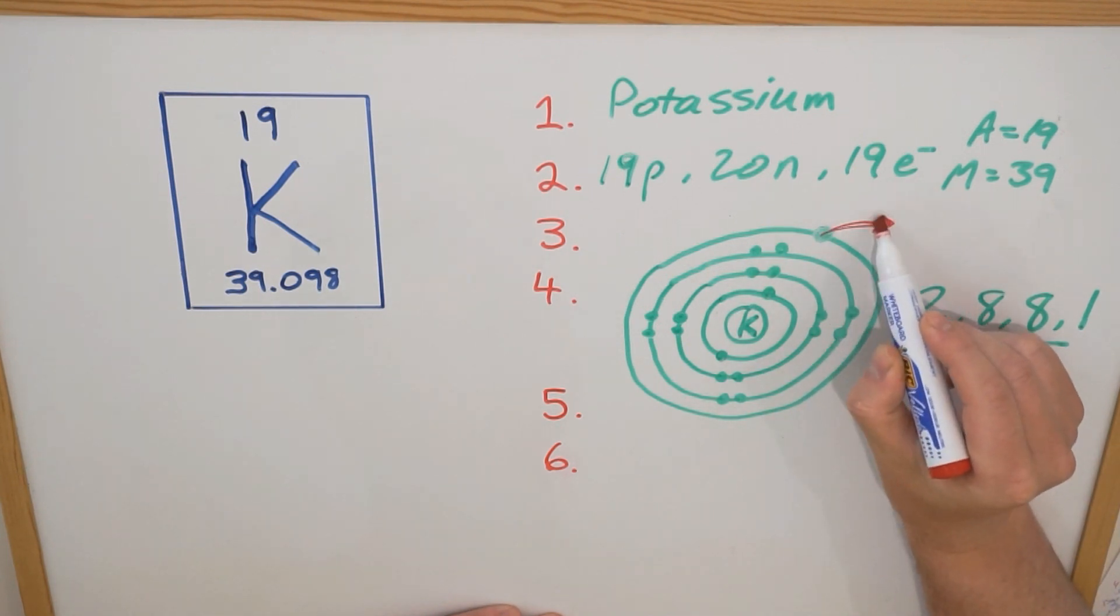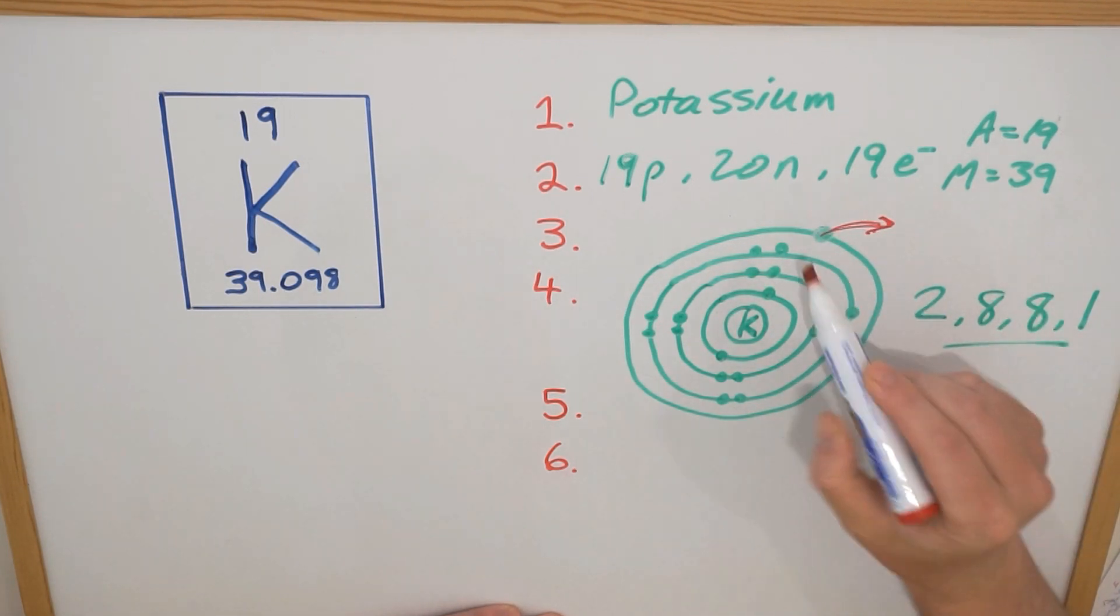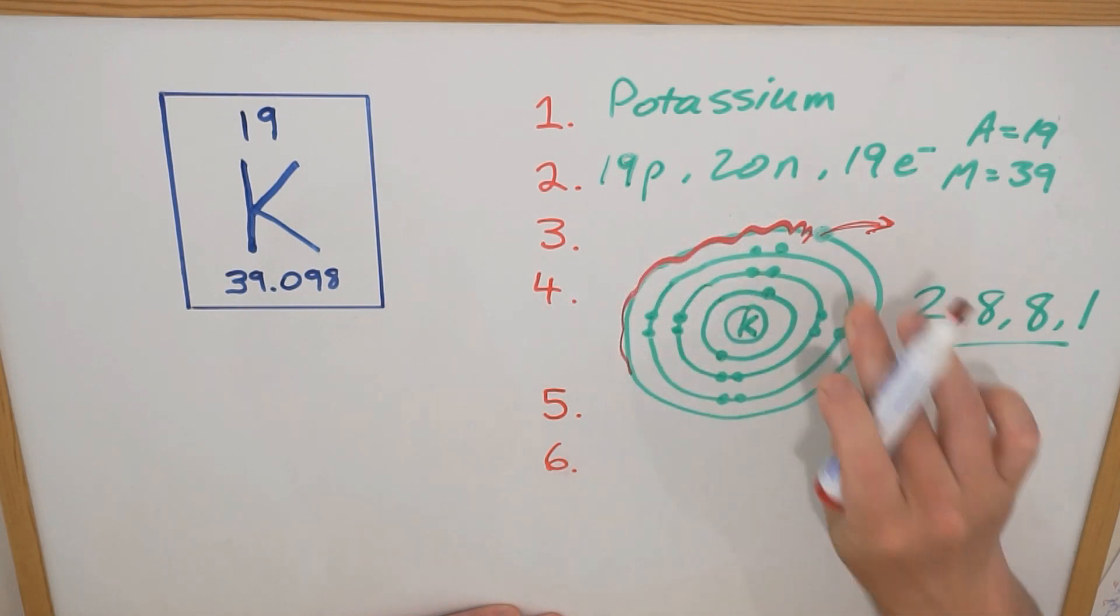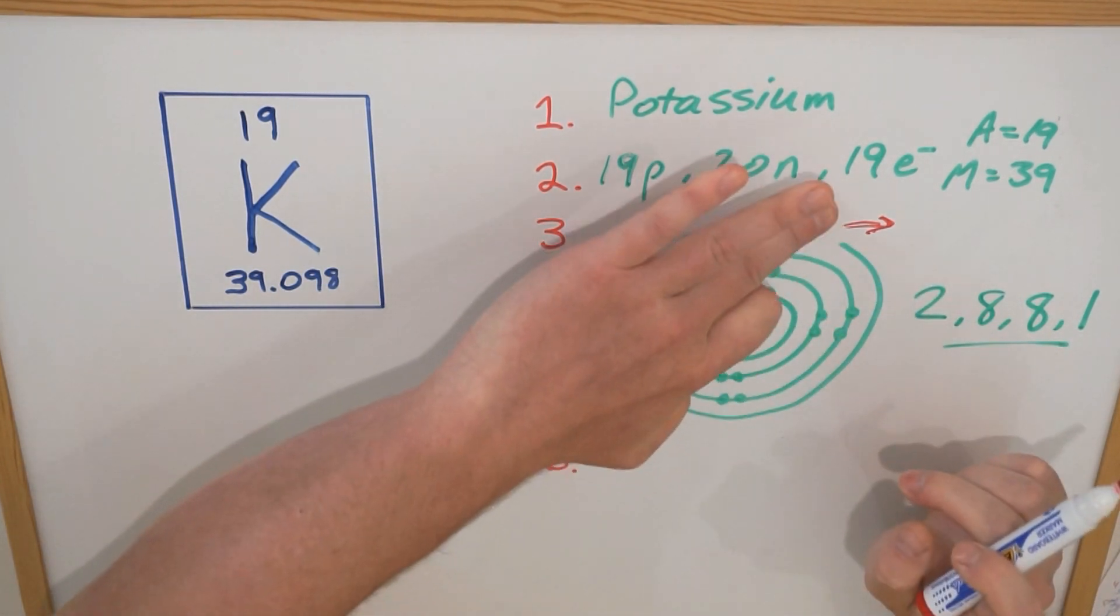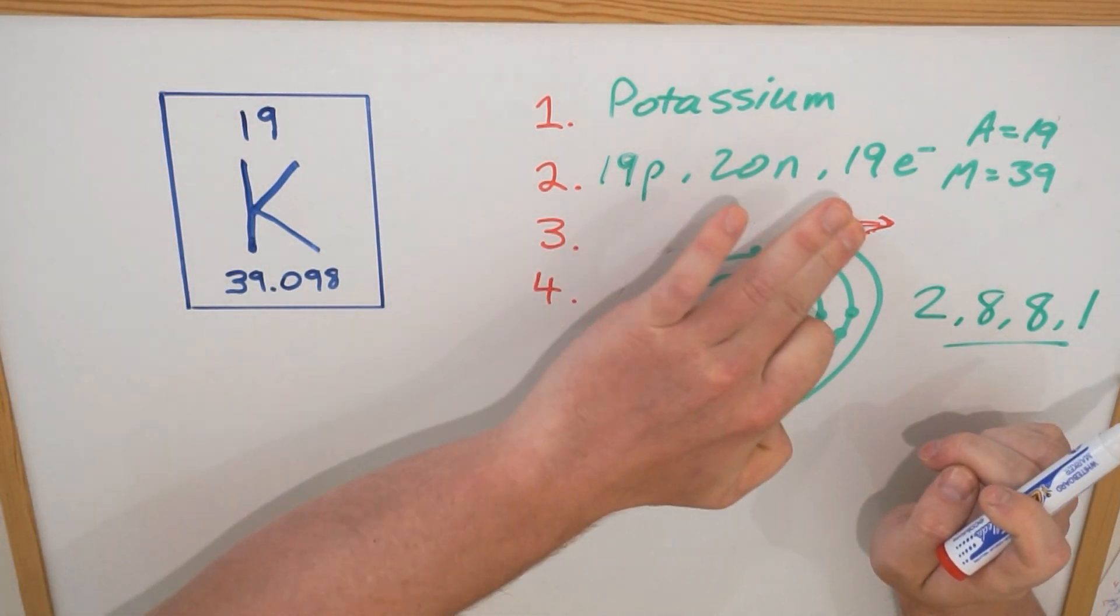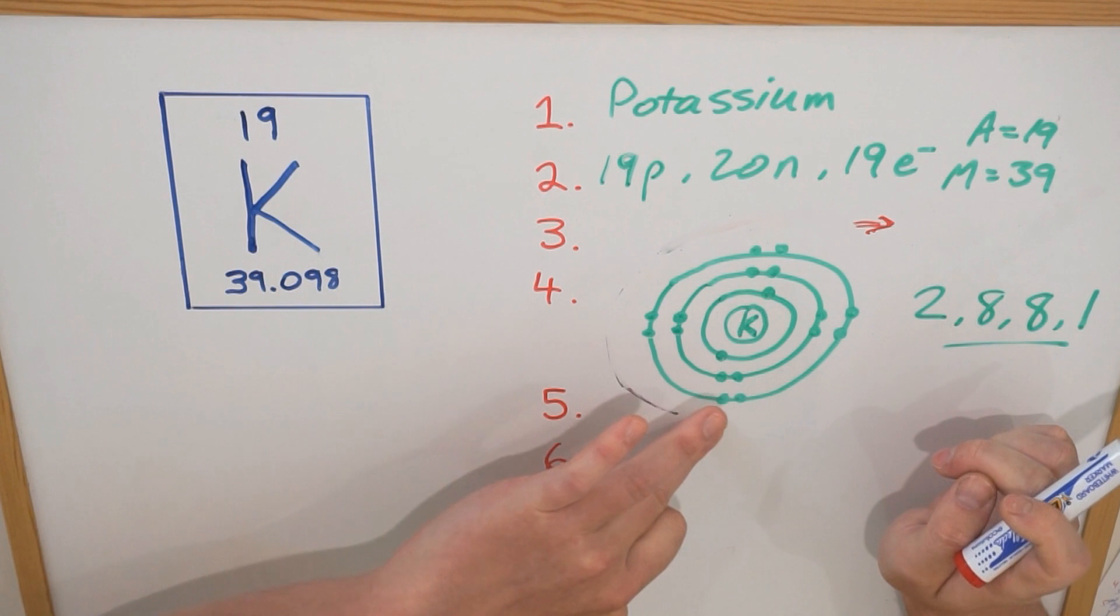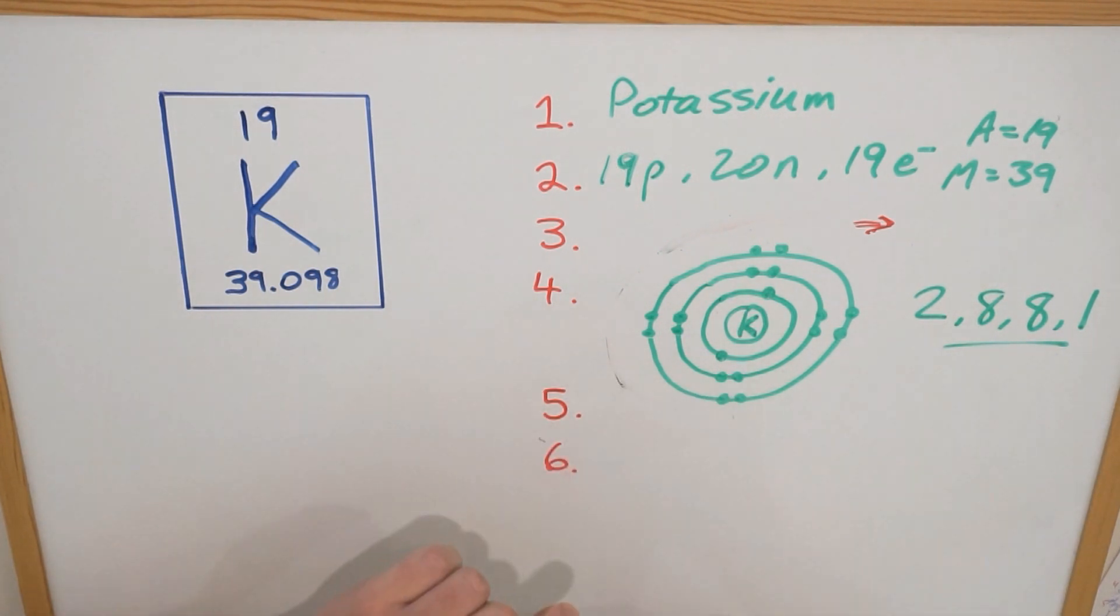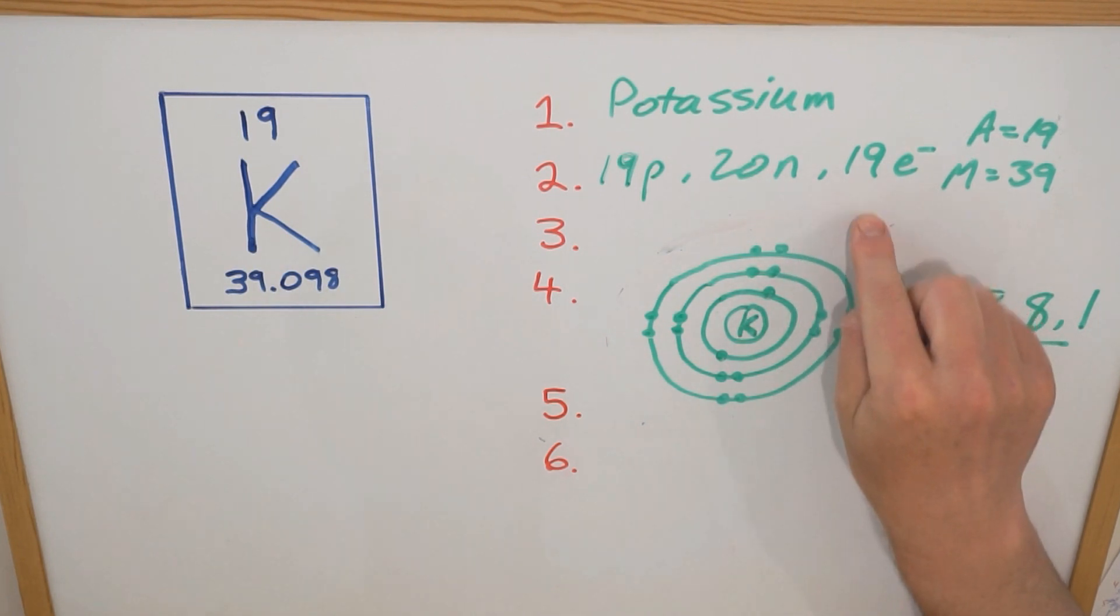So what potassium is going to do is it's going to find another atom that wants to gain an electron, and it's going to give this electron away to another atom that wants to actually gain that electron. If it gives this electron away to another atom or another element, then this is removed. So this whole shell doesn't exist anymore because it's given away that one electron that it had in that shell. And now we can see that potassium has a full outer shell because this third one has eight - one, two, three, four, five, six, seven, eight. And then potassium is happy, it's got a full outer shell.